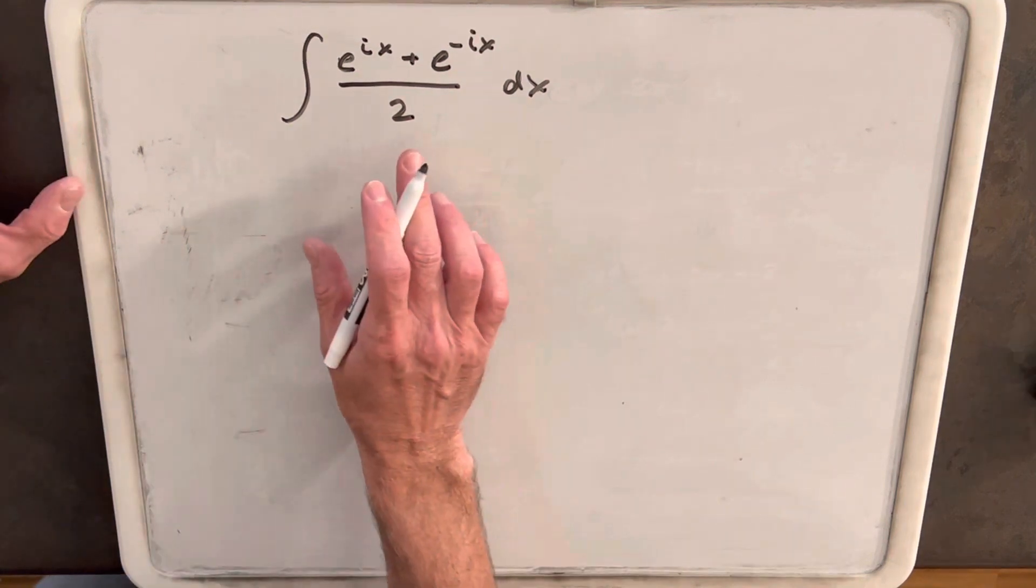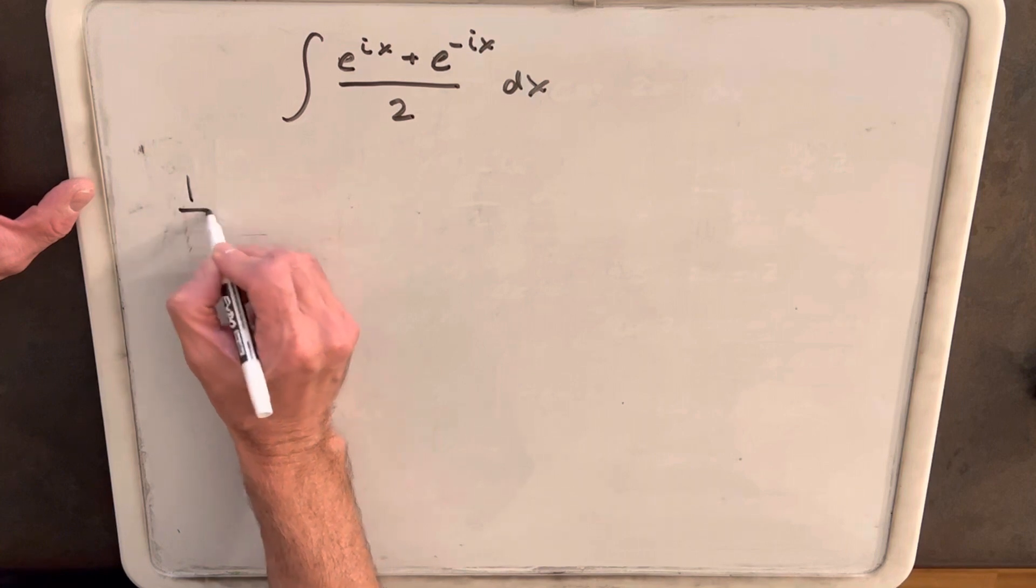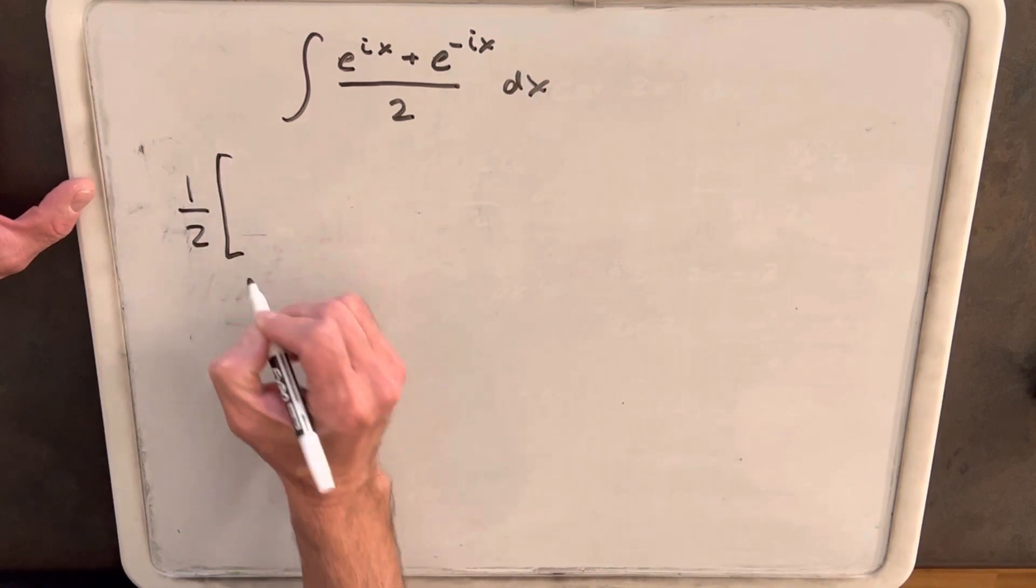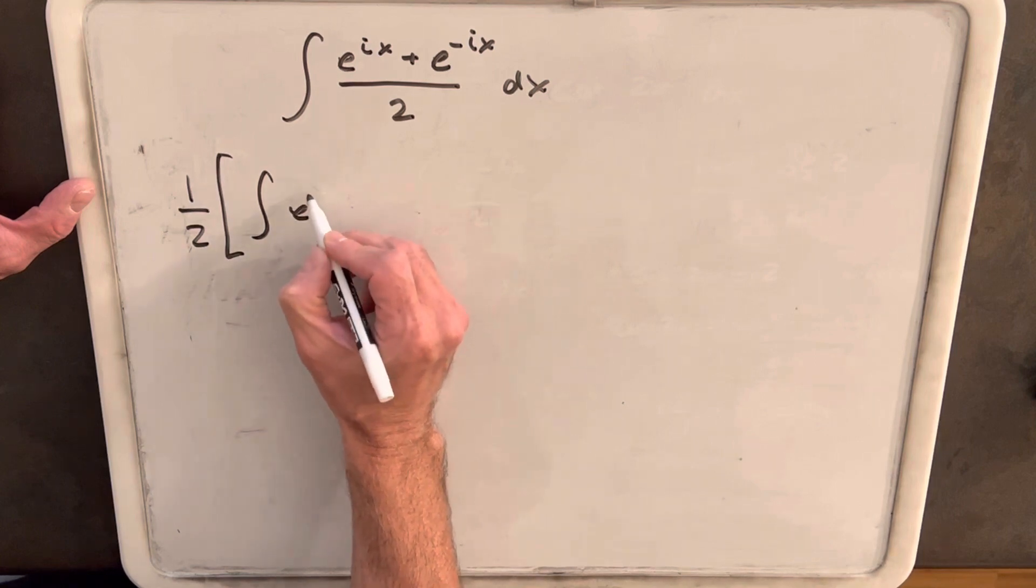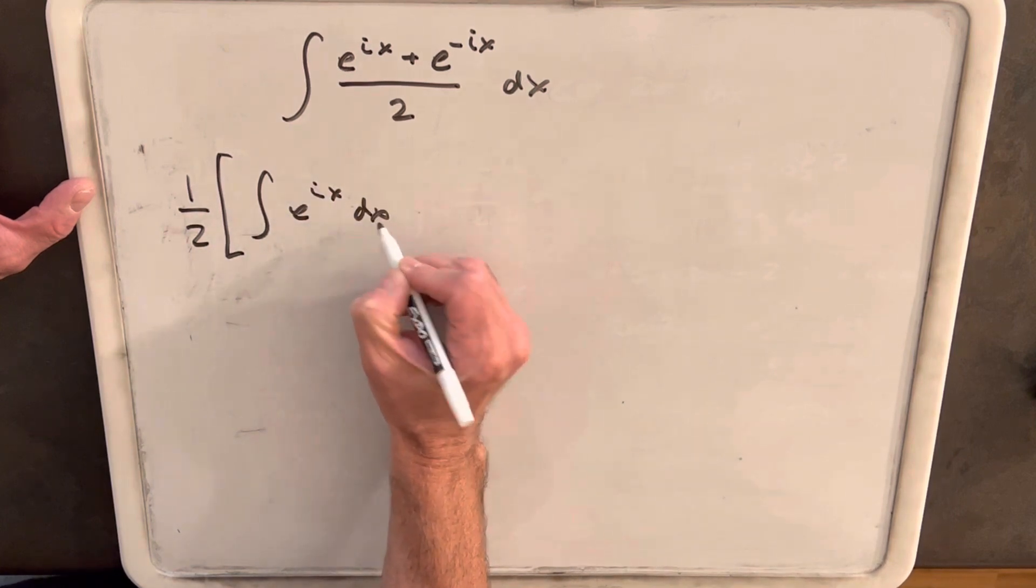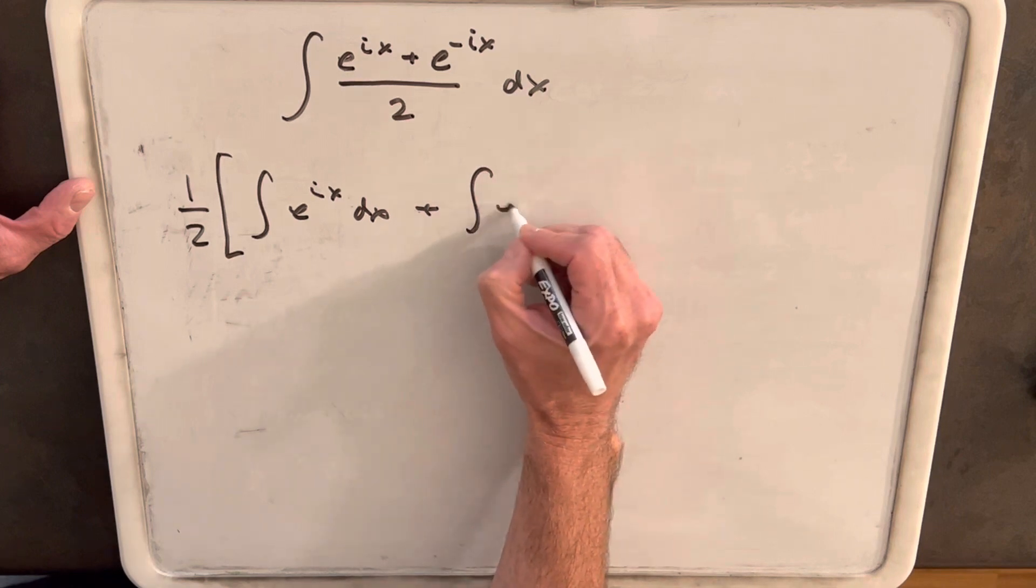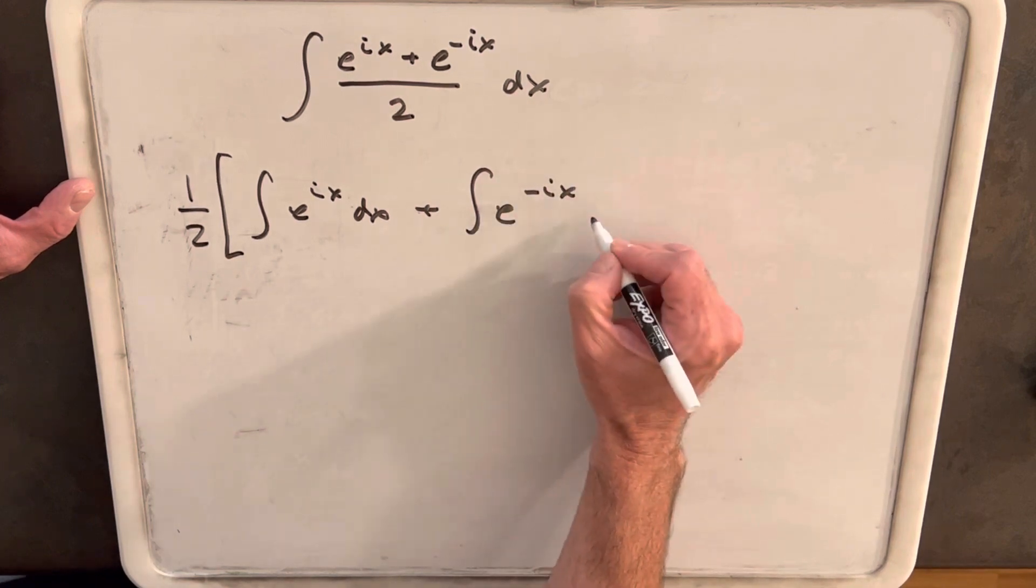So what I'm going to do is pull out this 2 from the denominator. We'll write a 1 half in front, and then we're going to split this into two integrals. So we'll have one being e to the ix dx, and then the second integral will be e to the negative ix dx.